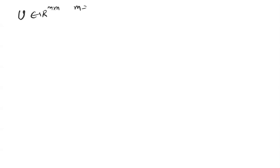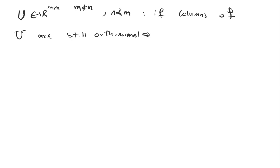Now the question is: what if U is not square? Let's say U is m by n where m is not equal to n. In this case, if the columns of U are still orthonormal, what will happen is U transpose U is equal to the identity matrix, but we cannot necessarily conclude that U U transpose is equal to the identity matrix.